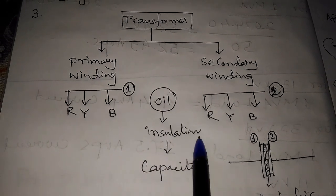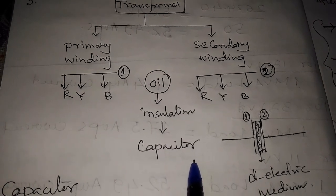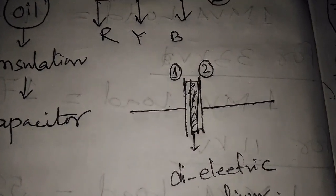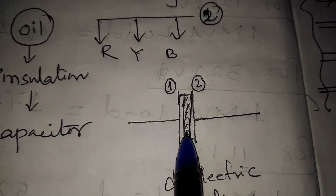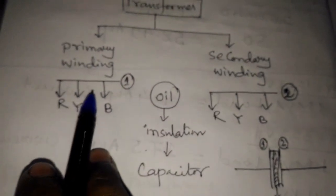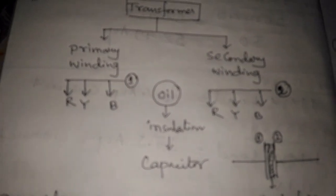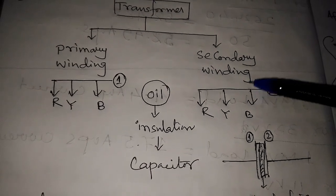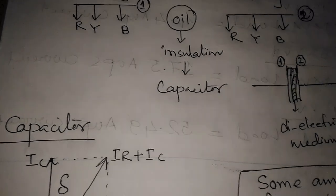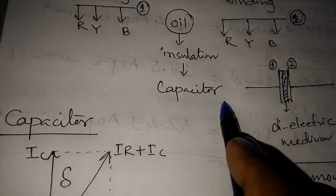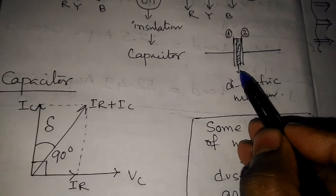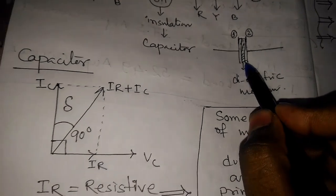The oil is the insulation of the transformer, acting as the capacitor of the transformer. A capacitor has two plates with a dielectric medium present in between. In the case of a transformer, the primary winding is one plate and the secondary winding is the other plate, and the oil is the insulation — the dielectric medium.